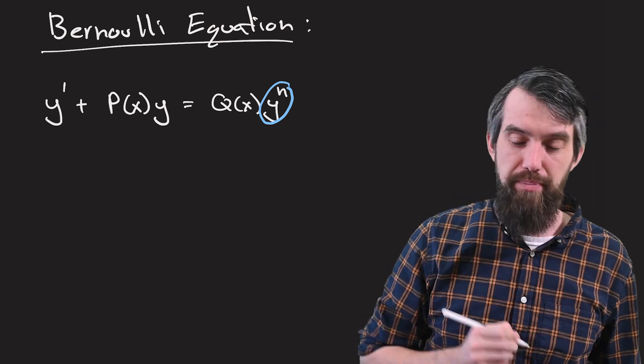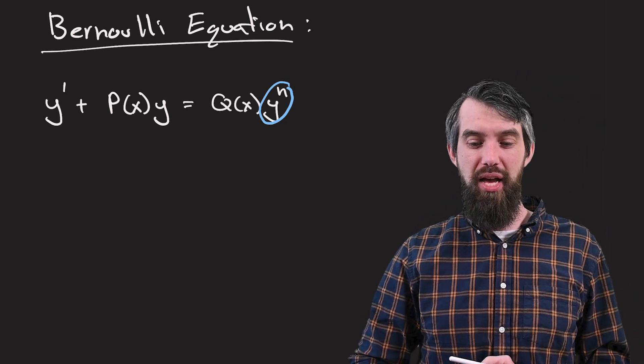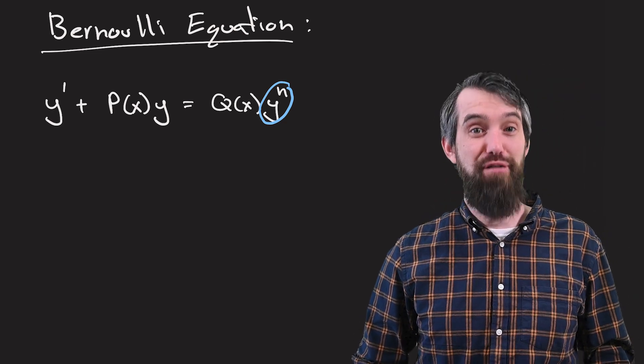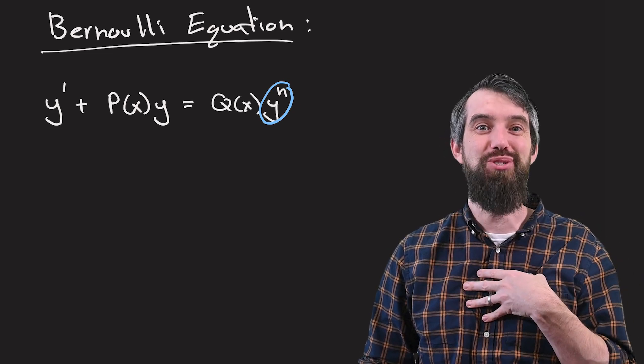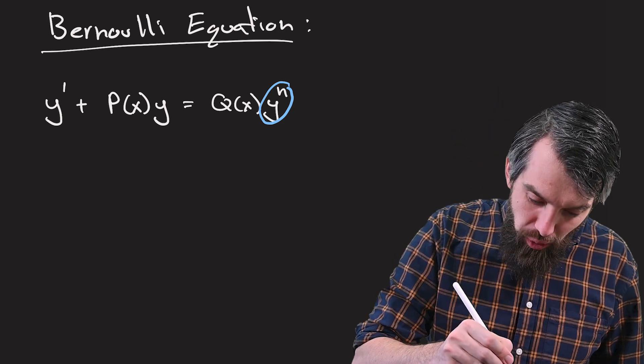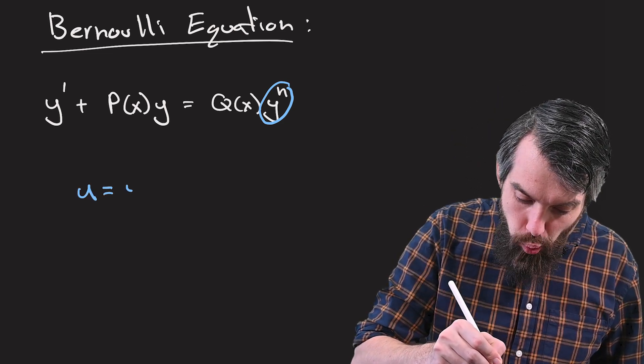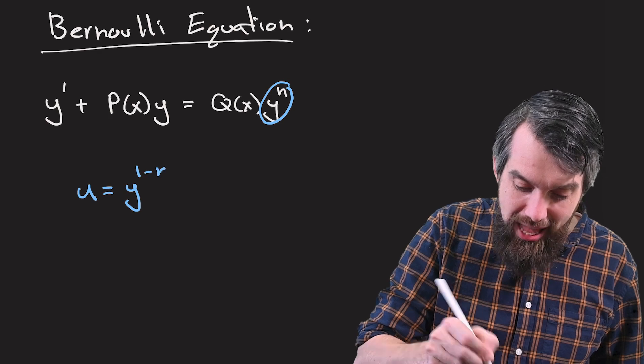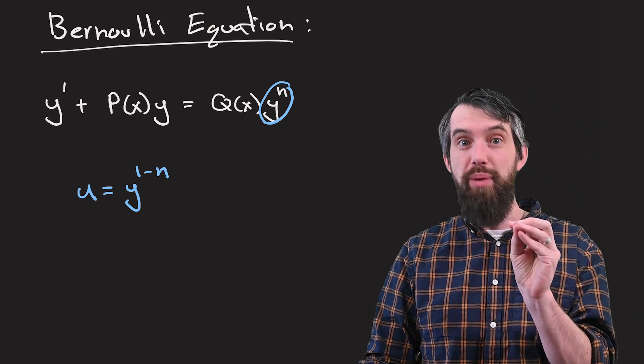Because here is the trick. I'm going to do a change of variables. I want this to be a first-order linear differential equation, because I know how to solve first-order linear differential equations. So the substitution we're going to use is the following. I'm going to let u equal to y to the 1 minus n. So this is a definition of a new variable called u.